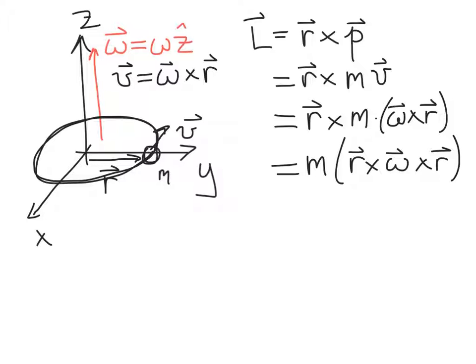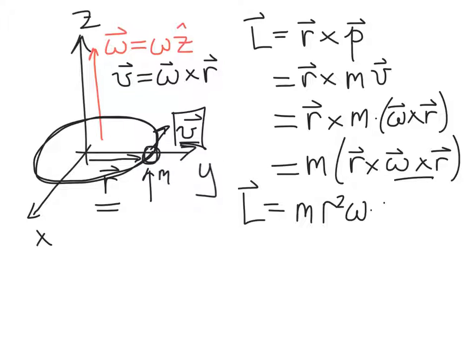Which direction does that point? When the particle is at this point, omega crossed into r gives us the velocity vector pointing along the negative x direction. So if we cross our r vector with our v vector at that point, we find that L points along the z-axis. So L is going to be m r squared omega times z-hat at that point.